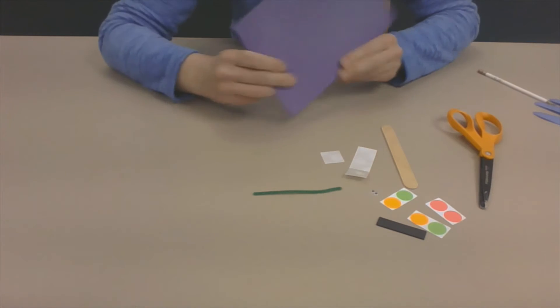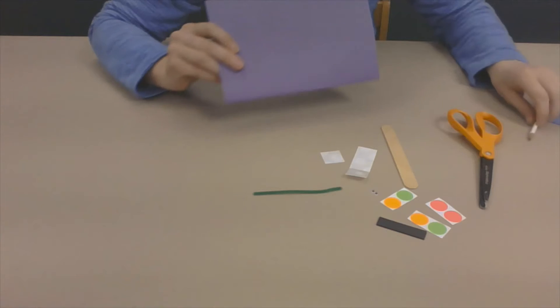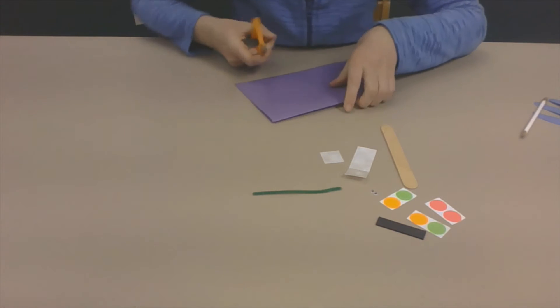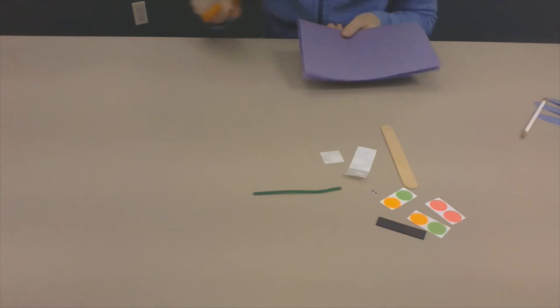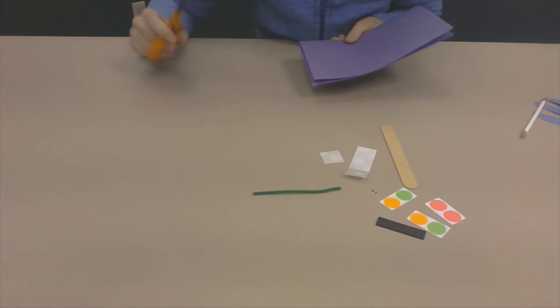I'm going to trace the outside of my hand. Okay, so I have the outside of my hand all traced to my paper. And then I'm going to take my scissors and cut my hand out. So this you might need an adult help with.